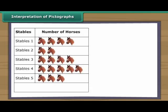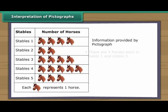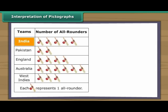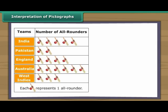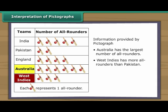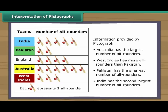Look at this pictograph. It shows details of horses in five different stables in a village. Each picture of a horse represents one horse. It is clear from the pictograph that there are four horses each in stable one and stable three. Stable four has the largest number of horses. Stable two has the least number of horses. Let us interpret one more pictograph. This pictograph shows details of all-rounders in five cricket teams of the world. Each picture represents one all-rounder. Australia has the largest number of all-rounders. West Indies has more all-rounders than Pakistan. Pakistan has the smallest number of all-rounders. India has the second largest number of all-rounders.